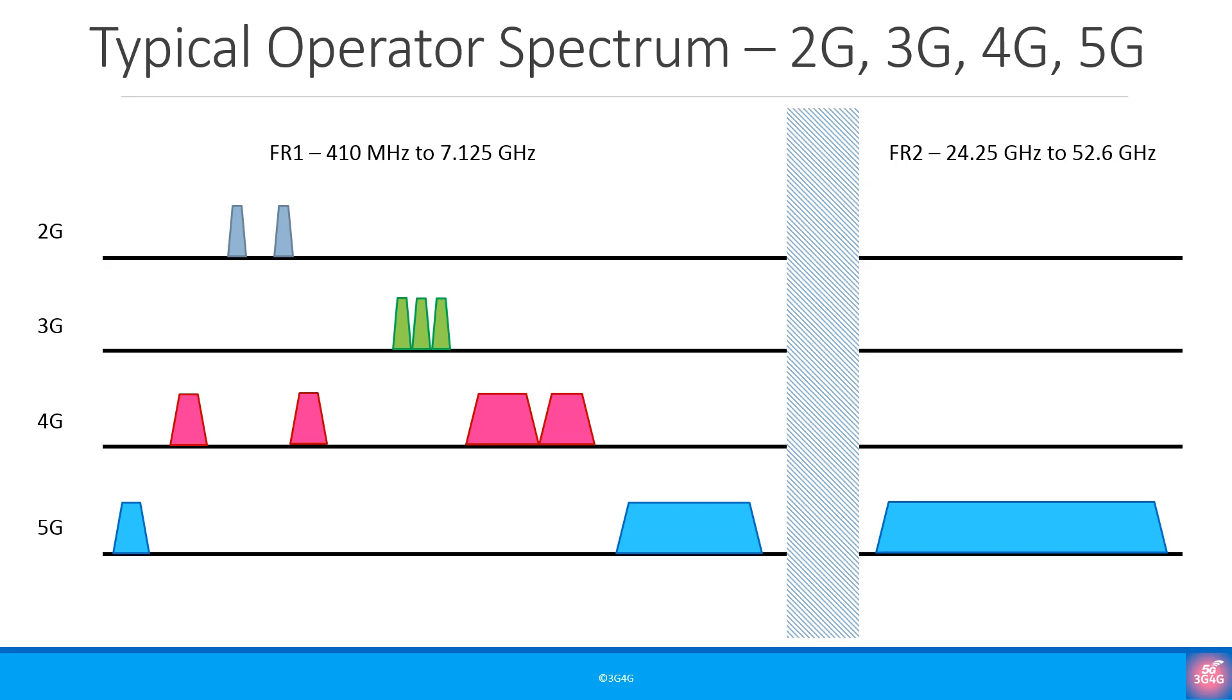Typically, the operator has frequencies for all different generations of technologies. They may decide to start refarming the frequency from an older generation to a newer one. So here 3G frequencies are being refarmed for 5G, and this is an example of 4G being refarmed for 5G.